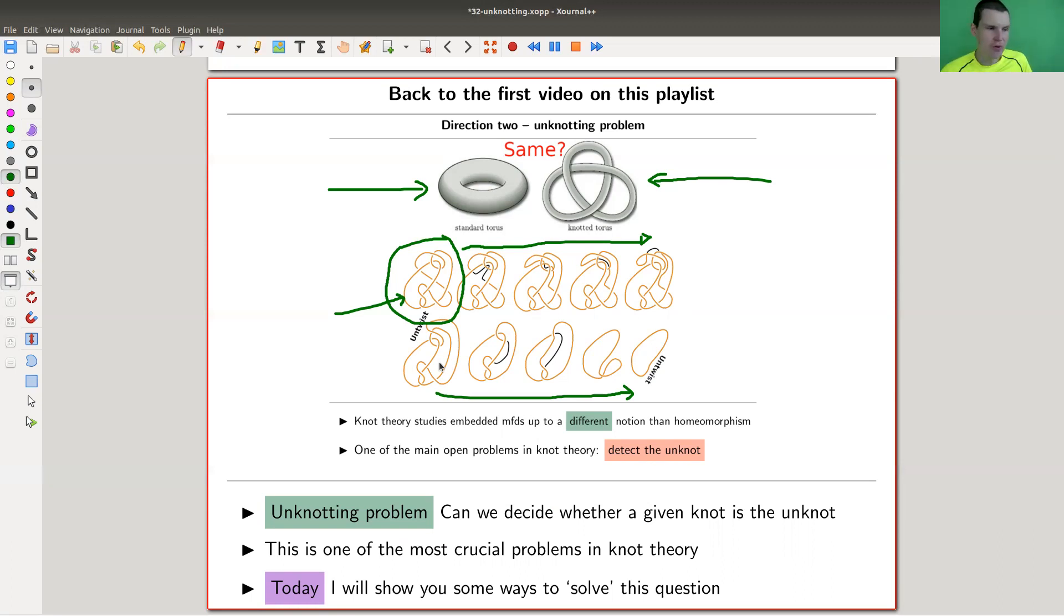Today I will show you at least some way to solve this problem, in the sense that you give me the knot, I run my machinery, the machinery, and I will get a yes or no answer. That's what I give you - a yes or no answer. An algorithm, if you want.